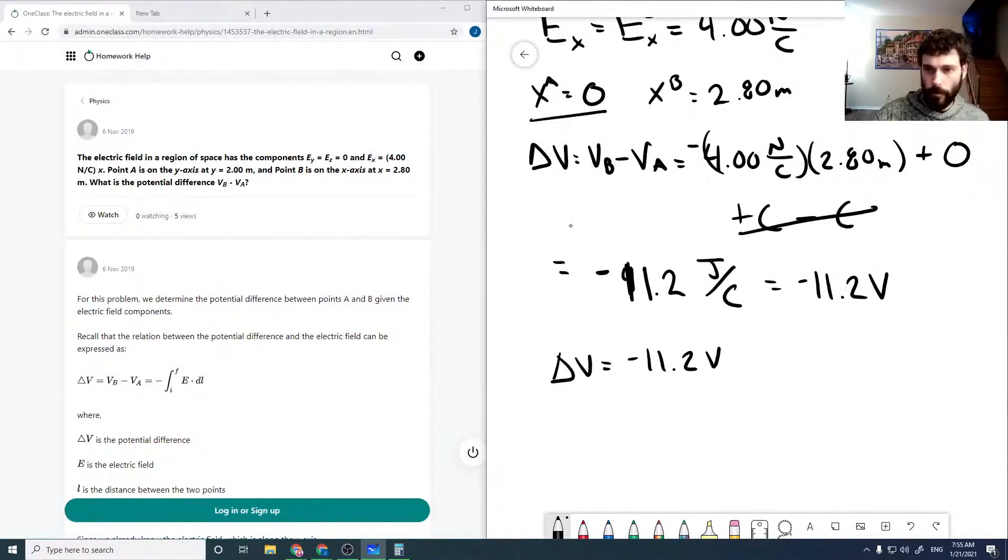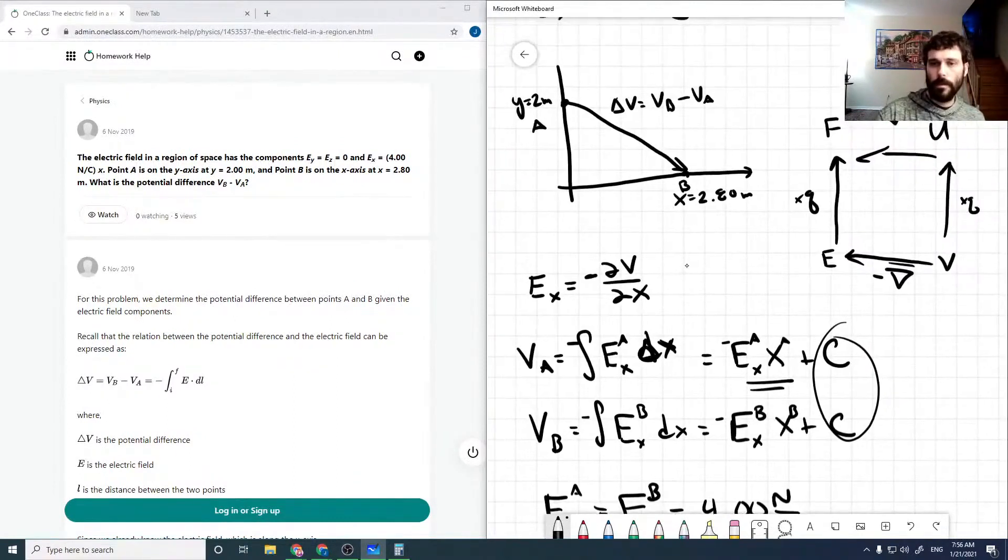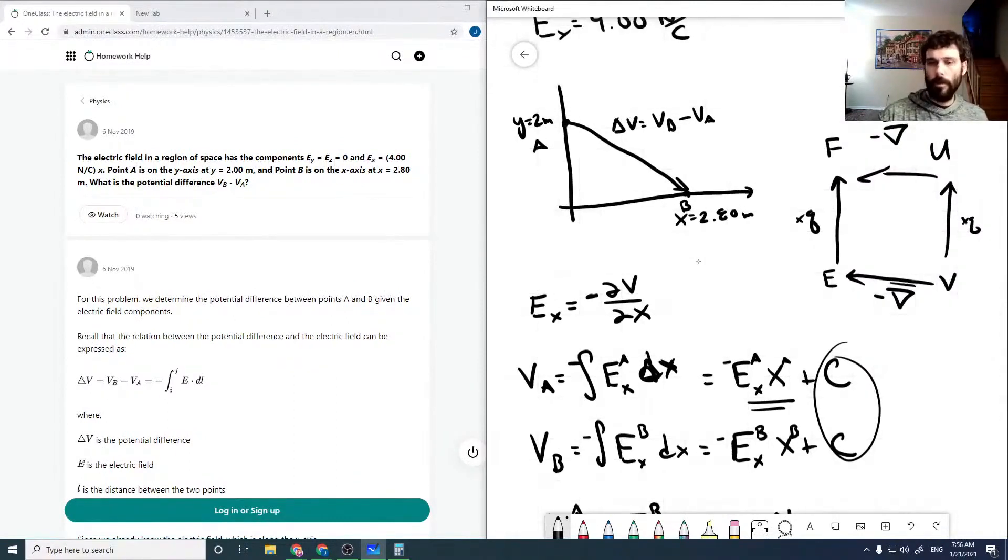So the point of this question or what this question was trying to point out is that even though we're moving along some R here, our delta V only cares about movement along the direction of our E field and moving in direction perpendicular to our E field has no delta V.